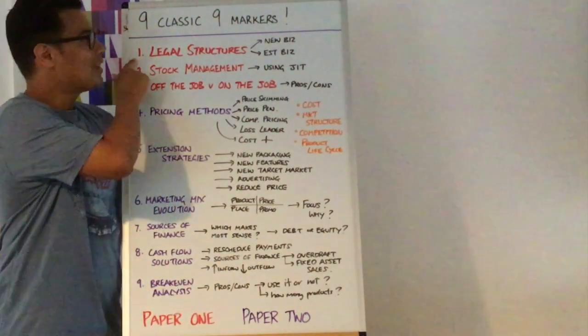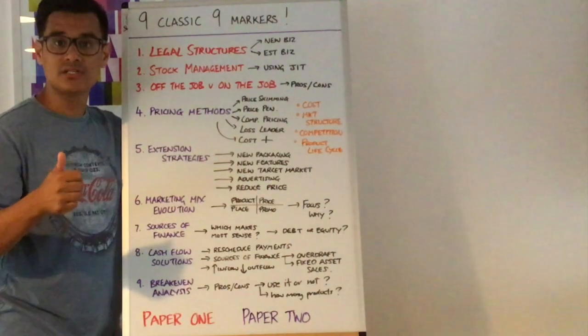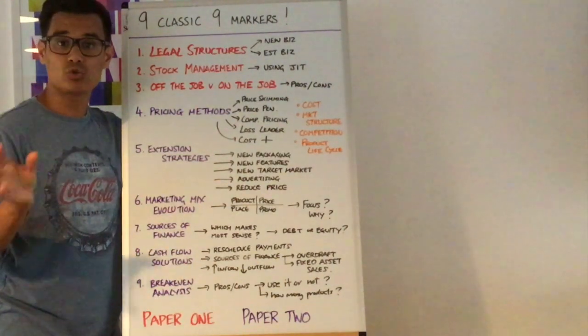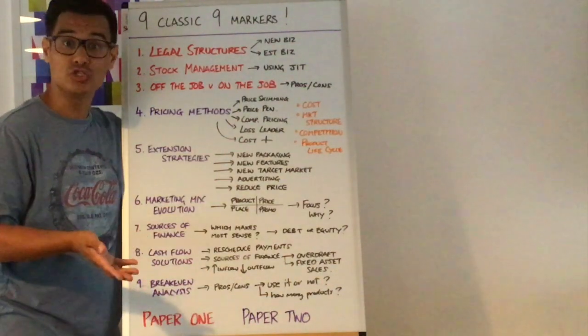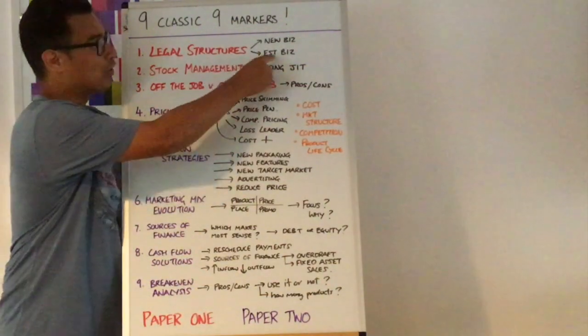So classic question number one, legal structures. It will be a brand new business turning from a sole trader to a private limited company and it might be recommend whether they should do it or not, especially the pros and cons.